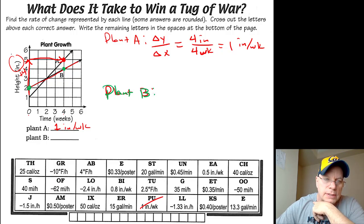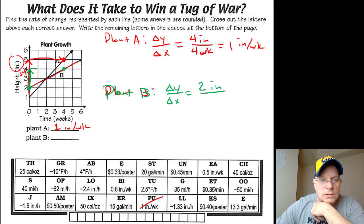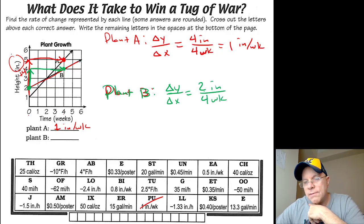I'm going from this point to this point. So my delta Y, I'm going from two inches to four inches. So that's a delta Y of plus two. Positive two inches. And then my delta X is one, two, three, four. Four weeks.